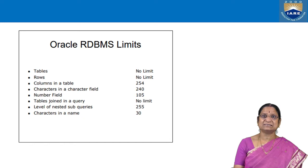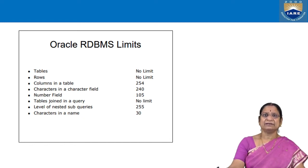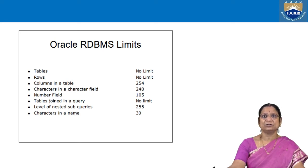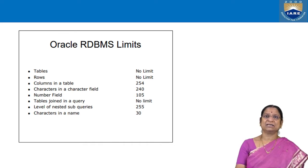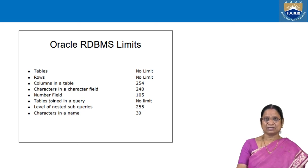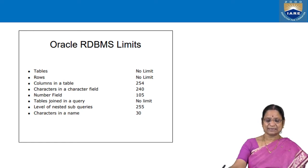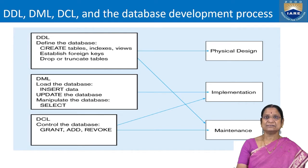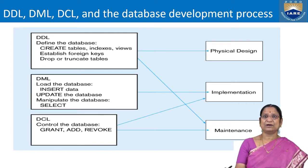Oracle RDBMS has certain limits based on version 10 — these figures keep changing with recent versions. There is no restriction on creation of tables under Oracle, and no restriction on adding rows to a table. Number of columns will be 254; characters in a character field will be 240; number field will be 105. There is no limit for tables joined in a query, and characters in a name will be 30.